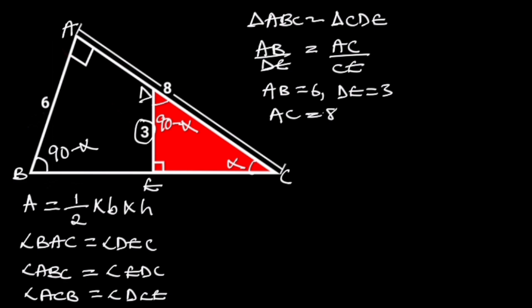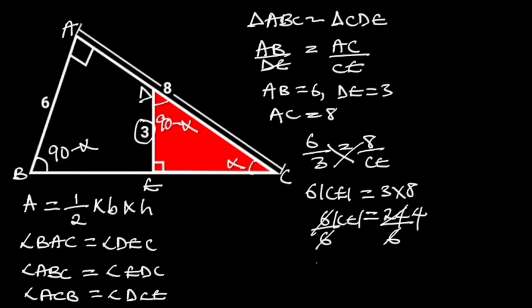Substituting these values in the above equation will give us 6 over 3 is equal to 8 over CE. By cross multiplication we will have 6 times CE is equal to 3 times 8. 3 times 8 is equal to 24. So 6 times CE is equal to 24. To find CE, we divide through by 6. 24 divided by 6 is 4. So we are left with CE is equal to 4.